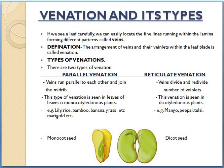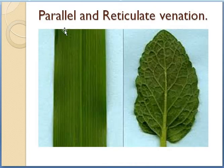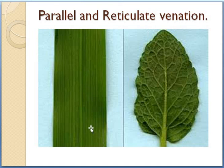The next topic is types of venation. There are two types of venation: first is parallel venation and second is reticulate venation. In parallel venation, this first leaf which you are seeing here is showing parallel venation, because the veins are running in a straight line and parallel to each other. That is why this type of venation is called parallel venation.